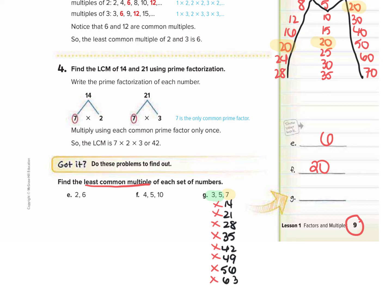You could check if three and five go into these numbers by dividing each number by three and then dividing by five. Let's continue our multiples of seven: 70, 77, 84, 91, 98, 105, 112, 119.